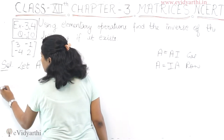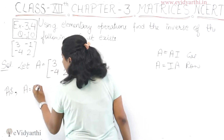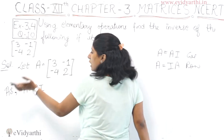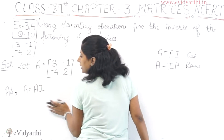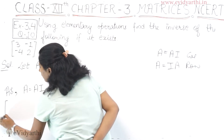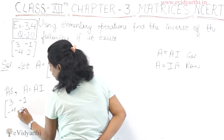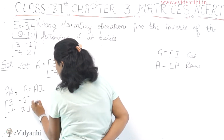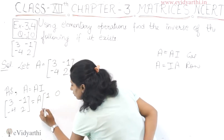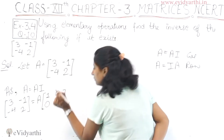As A is equal to A times I, we write it in matrix form. The left-hand side is the matrix A: [3, -1, -4, 2], and this is equal to A times the identity matrix [1, 0, 0, 1].